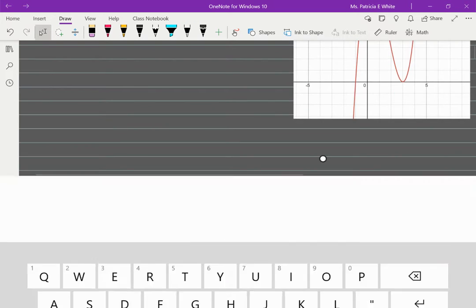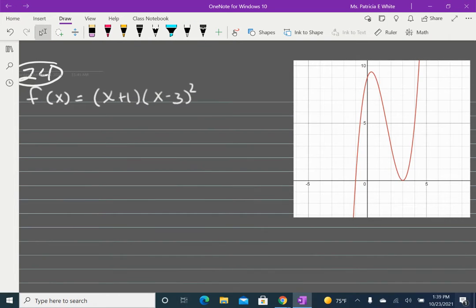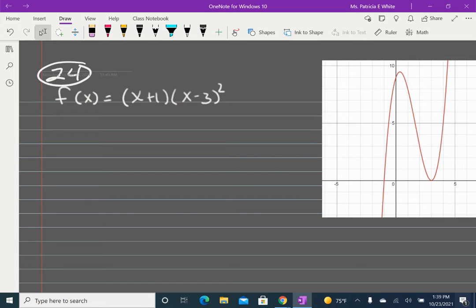24 is about graphing and finding those critical points on the graph. We're going to start with just talking about the degree. That leading term gives me two pieces of information. So if I multiplied all of this out, I would have x times x squared. So I have a positive x to the third.